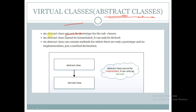An abstract class sets out the prototype for a subclass. An abstract class cannot be instantiated — it can only be derived. An abstract class can contain methods for which there are only prototypes and no implementation, just a method declaration.